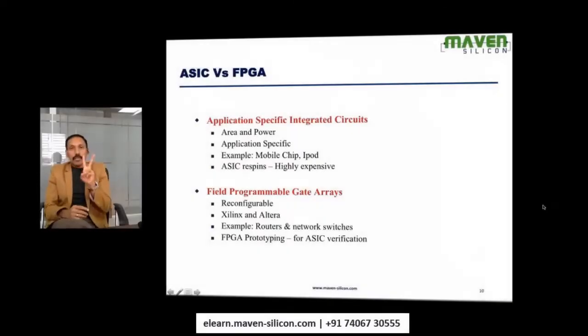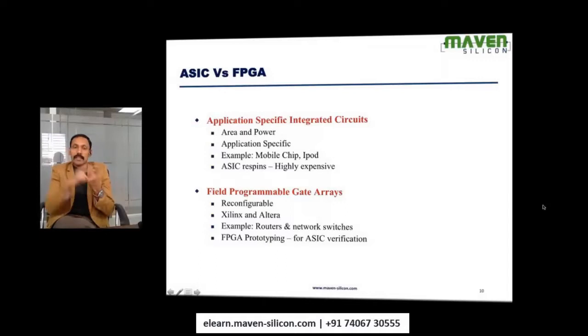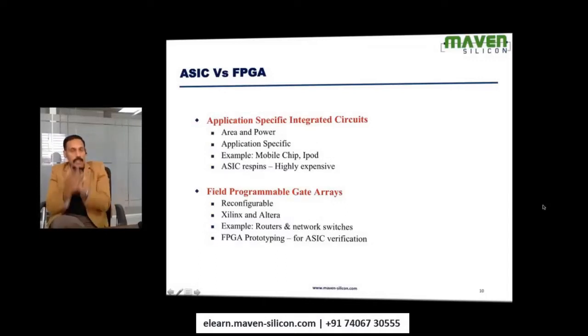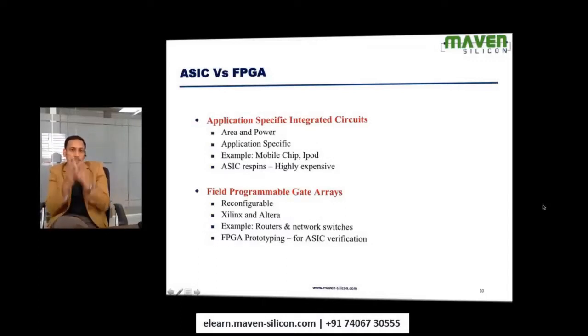In VLSI, there are two kinds of chips. One is ASIC, the other one is FPGA. Let's look at FPGA — Field Programmable Gate Array. It's a programmable chip.